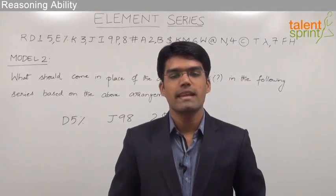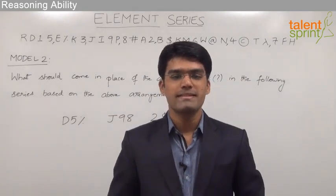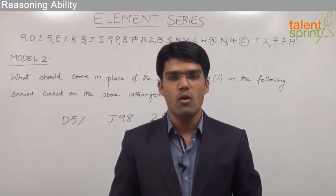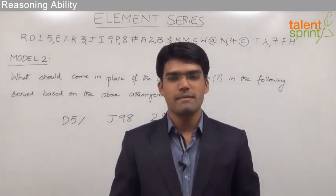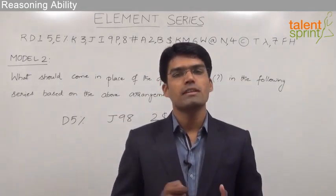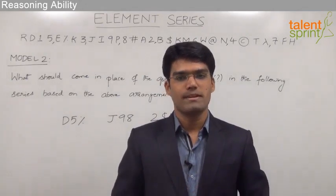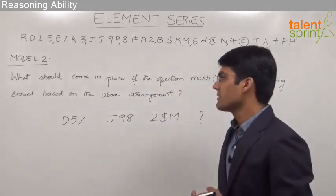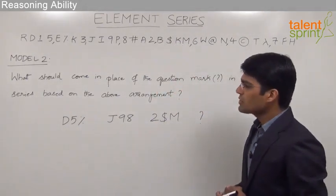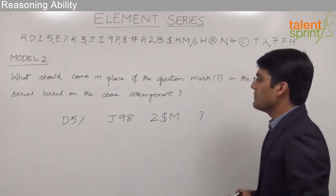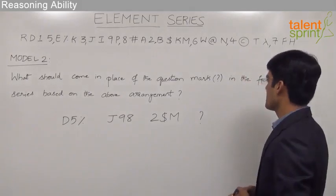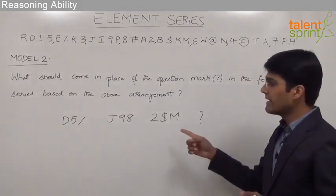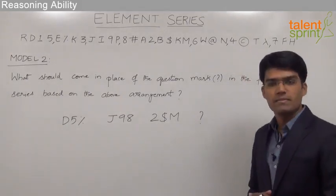Let us now take up the second model from the element series, where we are supposed to find out the missing triplet out of the given set of triplets. Let us look at the question: what should come in place of the question mark in the following series based on the above arrangement?